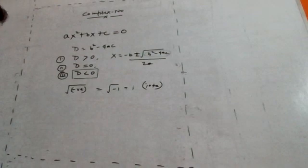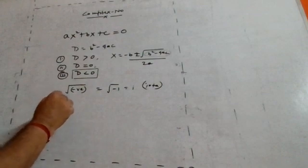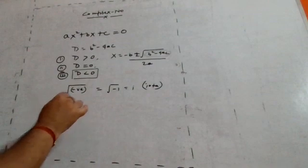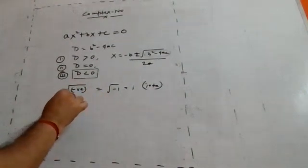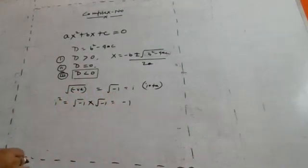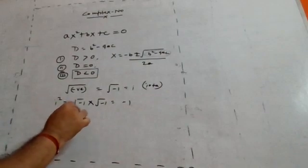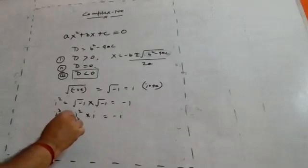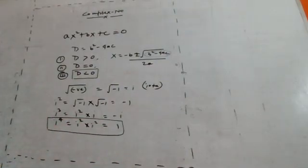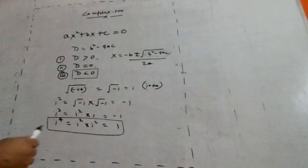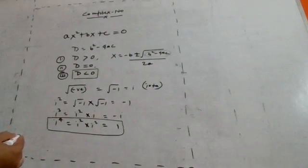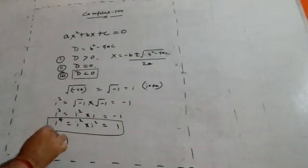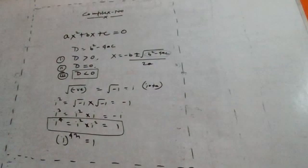Now let's develop a series for powers of i. i² = i × i = √(-1) × √(-1) = -1. i³ = i² × i = -1 × i = -i. i⁴ = i² × i² = (-1) × (-1) = +1. The key standard result is: i⁴ = 1, and therefore i raised to the power 4n equals 1.